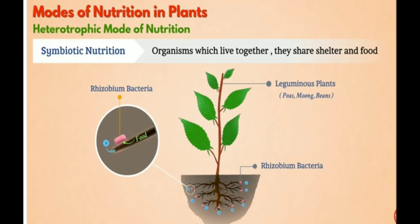One more example: leguminous plants and rhizobium bacteria live together. Leguminous plants such as peas, moong, beans, etc. let bacteria live on their roots and provide food to them. In return, the rhizobium bacteria convert atmospheric nitrogen into nitrates, making it useful to the leguminous plants. In this way, both benefit from each other. This is the example of symbiotic nutrition.